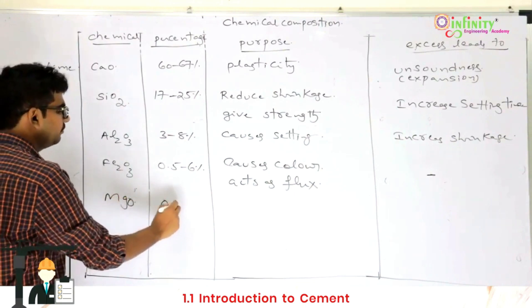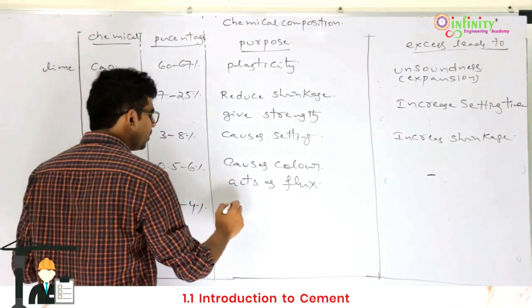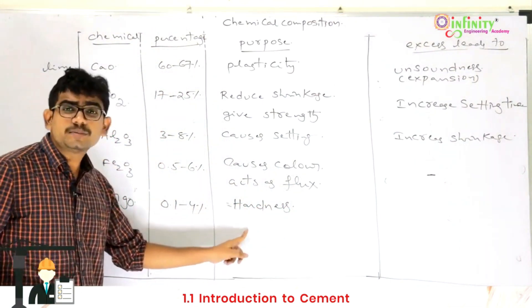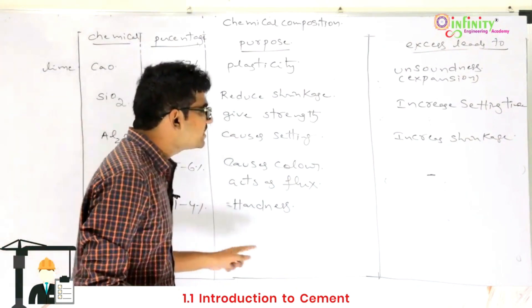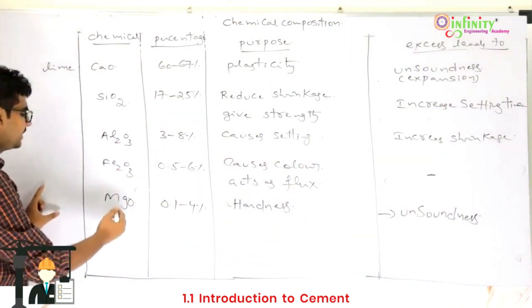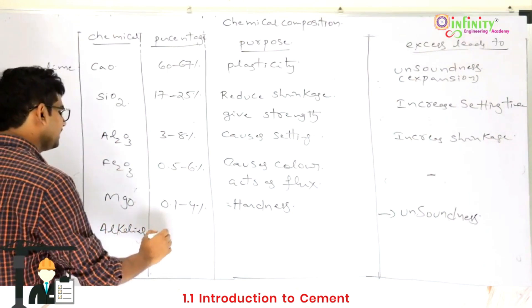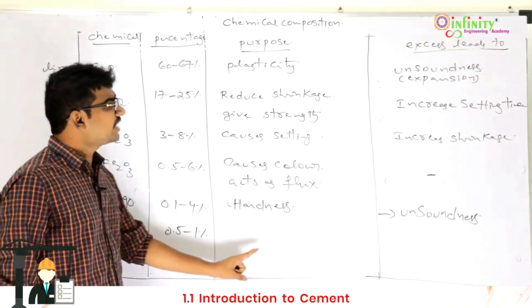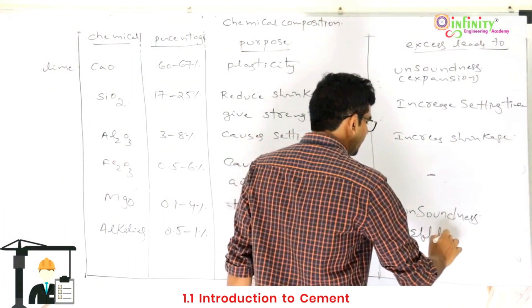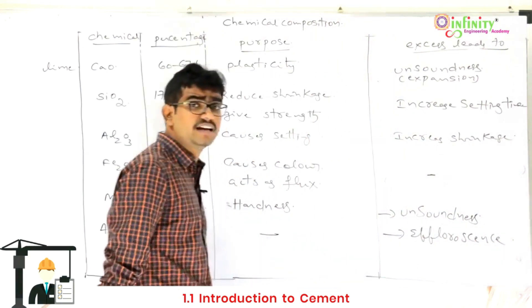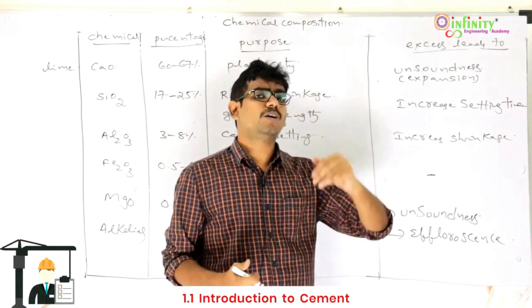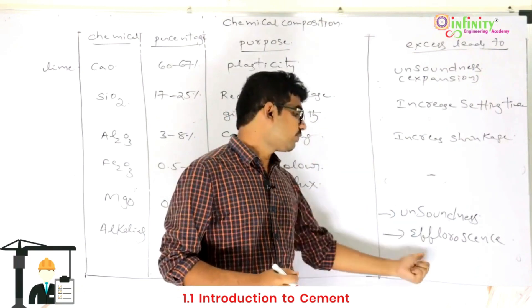Next is magnesia, at 0.1 to 4 percent. Magnesia causes hardness to the cement — hardness means resistance to scratching. If magnesia is excess, it will cause unsoundness (expansion) to the cement. Next is alkalis (Na₂O + K₂O), at 0.5 to 1 percent. Alkalis do not have any useful purpose in cement or concrete, but if excess, they cause efflorescence — the formation of white or yellow patches on bricks or concrete.